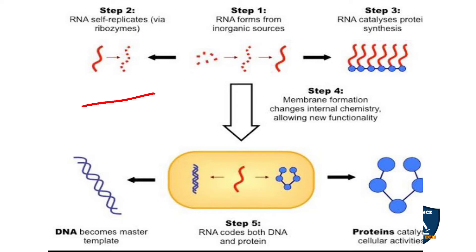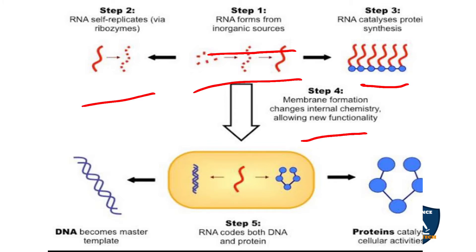RNA has ribozymes. With the help of ribozyme enzymes and inorganic sources, the RNA is self-replicating. In step 3, the RNA synthesizes and prepares for protein synthesis. In the next step, it is charged for new functions. Here you can see RNA codes for both DNA and protein synthesis — RNA is doing the coding.